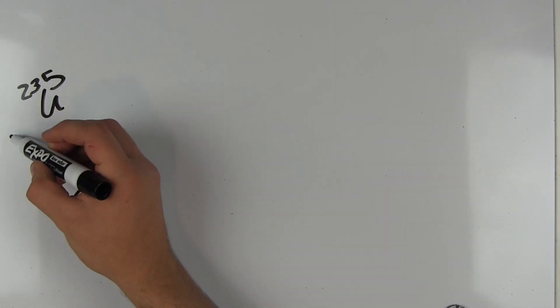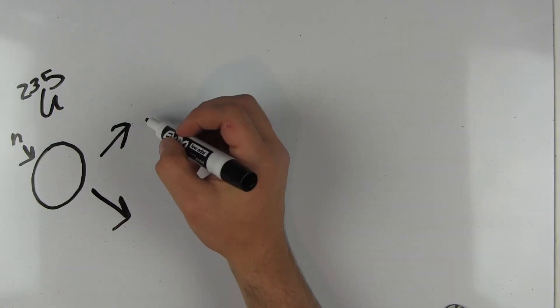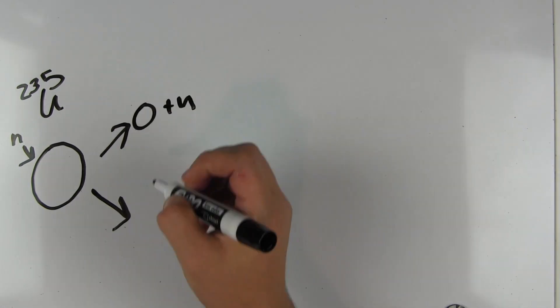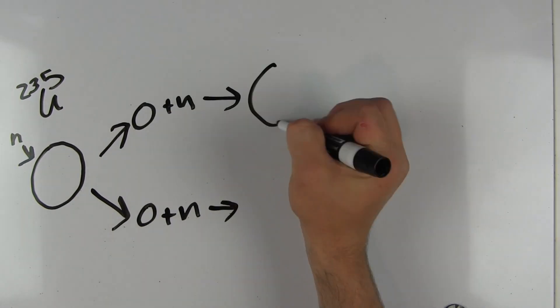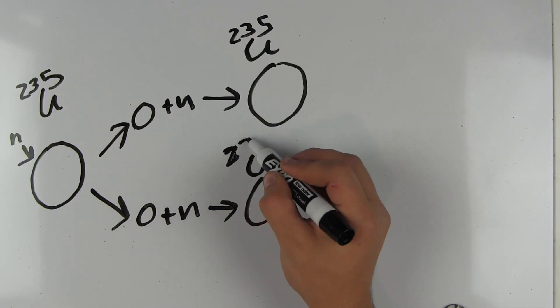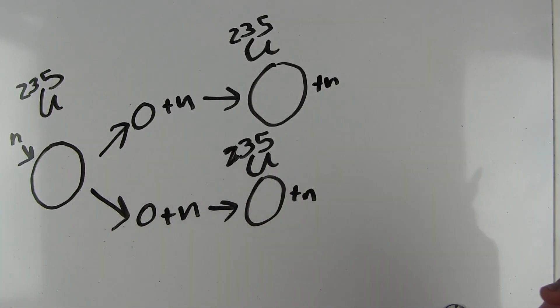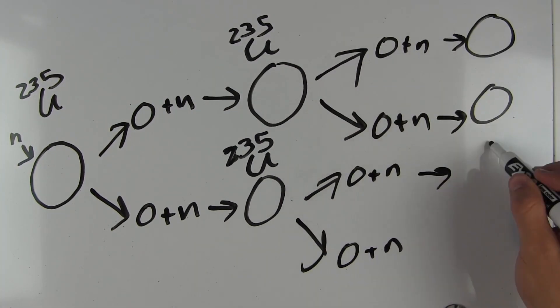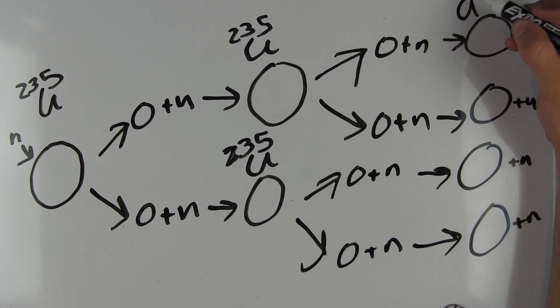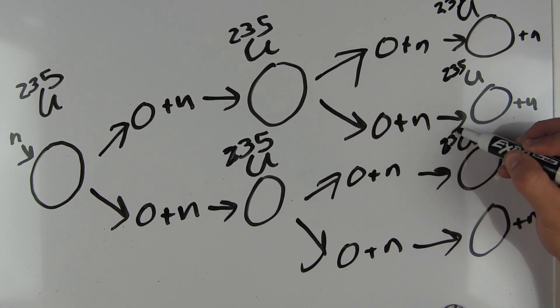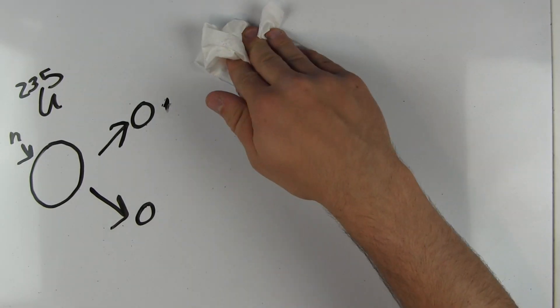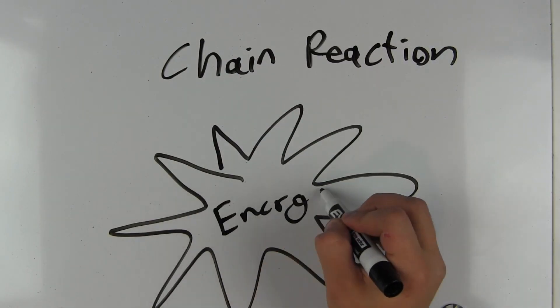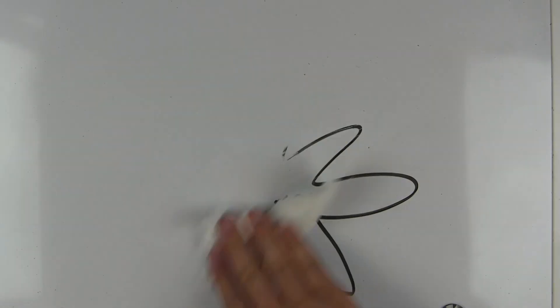When the uranium-235 atom is hit by a neutron, it produces two lighter elements as well as two or three new neutrons. This creates a chain reaction, because each uranium atom that is hit by a neutron in turn sets off two or three more uranium atoms. This ends in a huge release of energy in the form of an explosion.